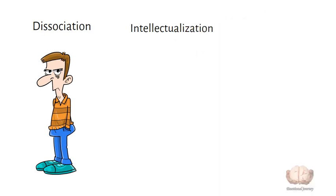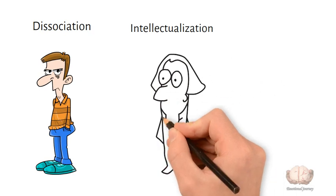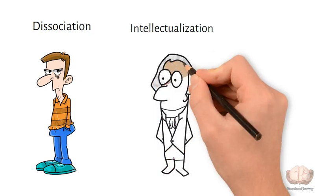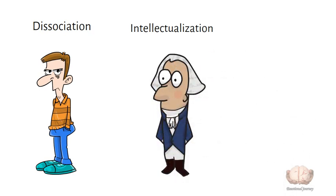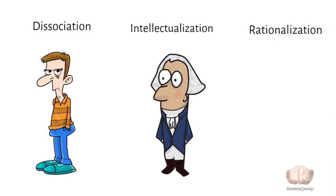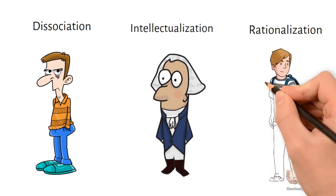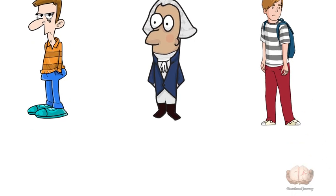Intellectualization: focusing only on facts or logic to avoid dealing with upsetting emotions. For example, treating a breakup in a cold, detached, unemotional manner. Rationalization: creating plausible but untrue excuses to justify behaviors, feelings, or failures. For example, explaining poor performance by saying I didn't really try or I don't care.